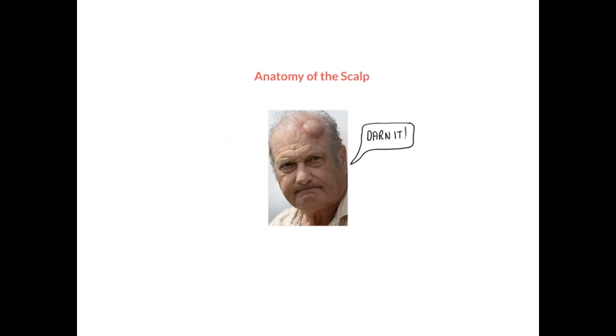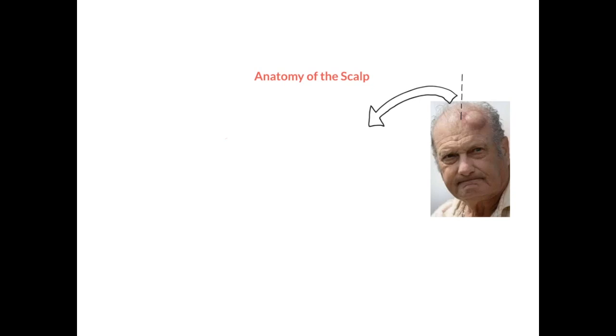Let's take a closer look at the anatomy of the scalp and the layers that form it. If we take this gentleman here and imagine that we're taking an incision through the top of the head, cutting through the various layers of the scalp, the first and most superficial layer would be the skin. The skin itself consists of multiple layers broadly divided into the epidermis and the dermis. Within the dermis we find hair follicles, sweat glands, and sebaceous glands which secrete an oily substance. It's not unusual for patients to present with blockages to the sebaceous glands, causing what's known as a sebaceous cyst.